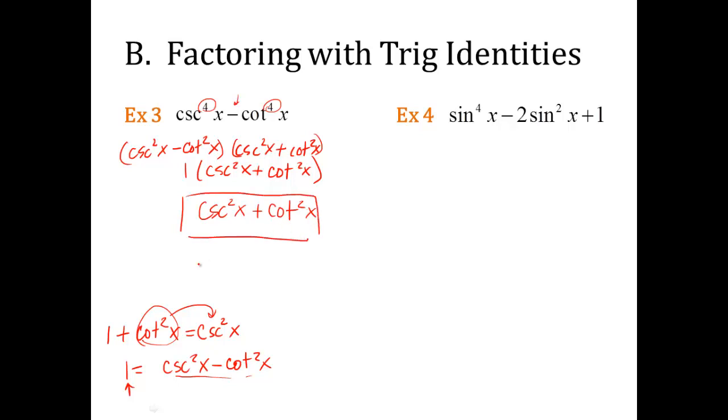Alright, example four. Sine to the fourth of x minus two sine squared of x plus one. Alright, well, that might feel a little bit overwhelming, but let's think of it like this. What if this was x to the fourth minus two x squared plus one? I'm hoping that you would be able to factor this a little more clearly. Remember, MIFTARM or box method, whatever you want to use.